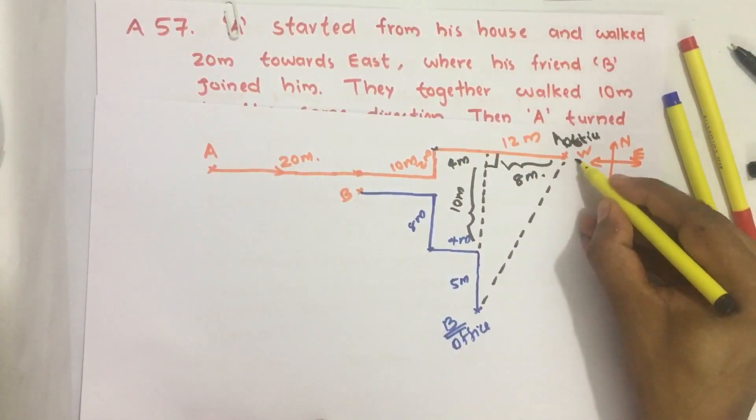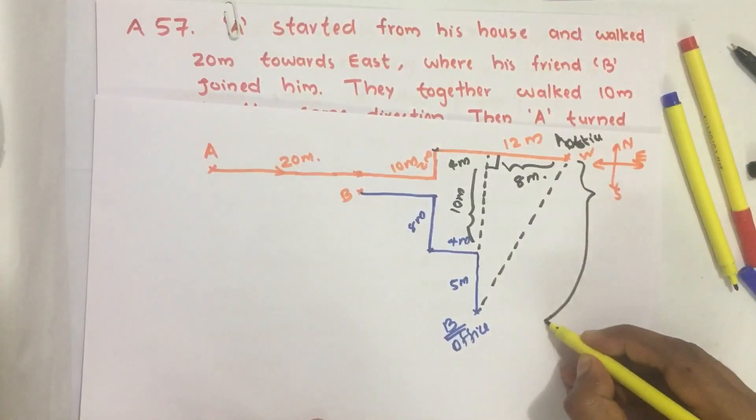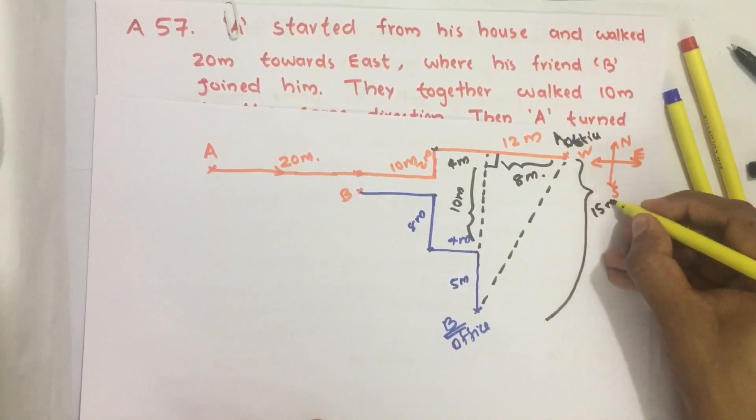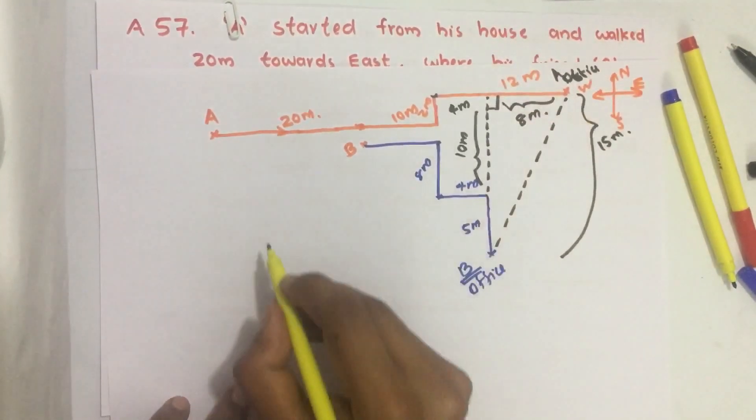Therefore, the height of this triangle is 10 meters plus this 5 meters, it is 15 meters. So we got a triangle.